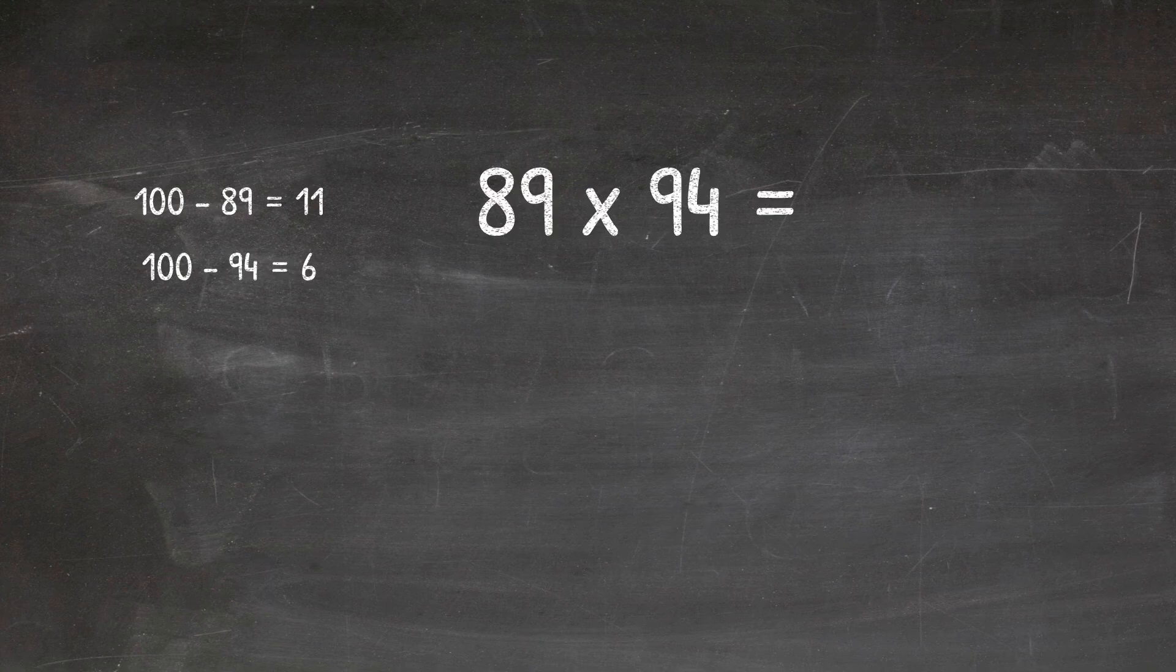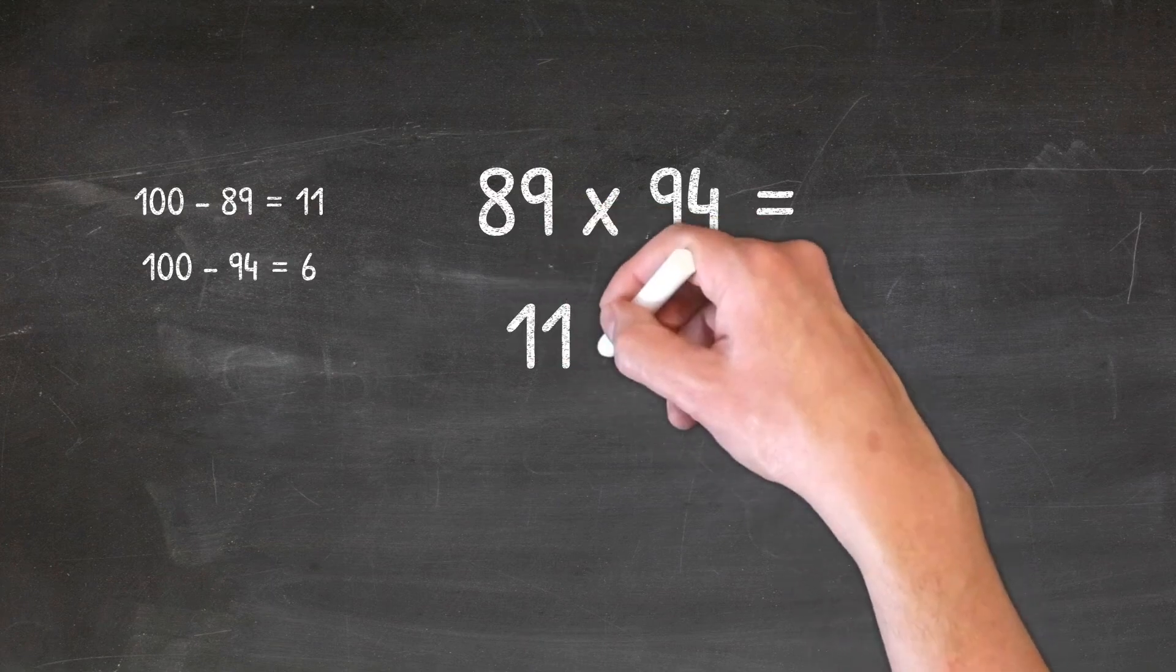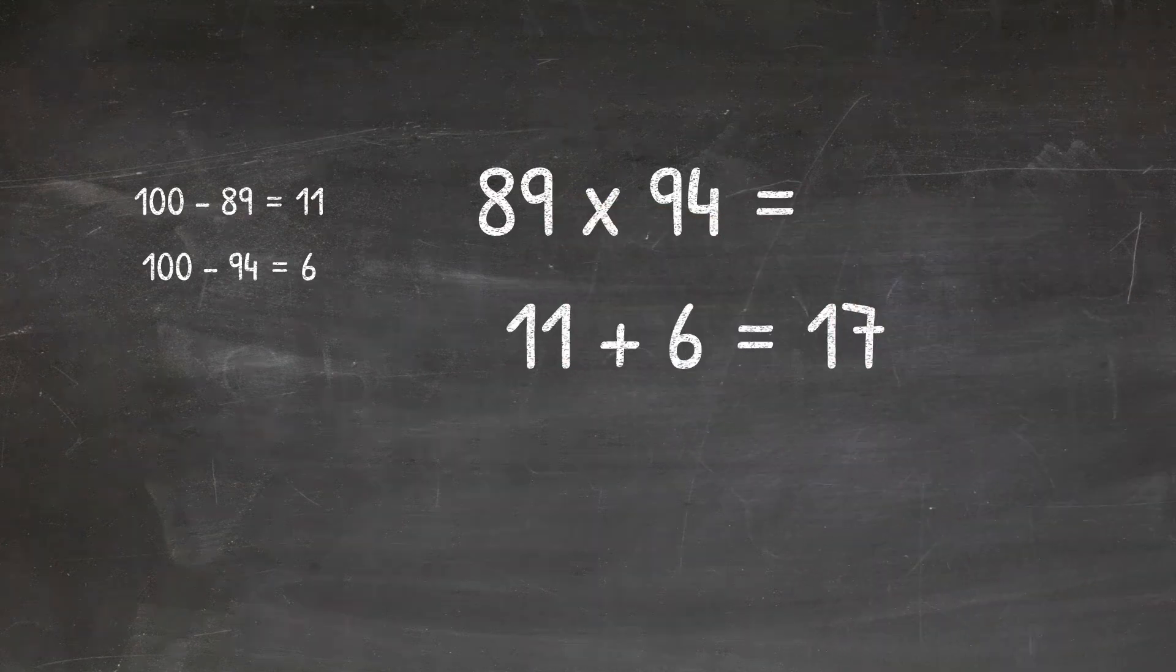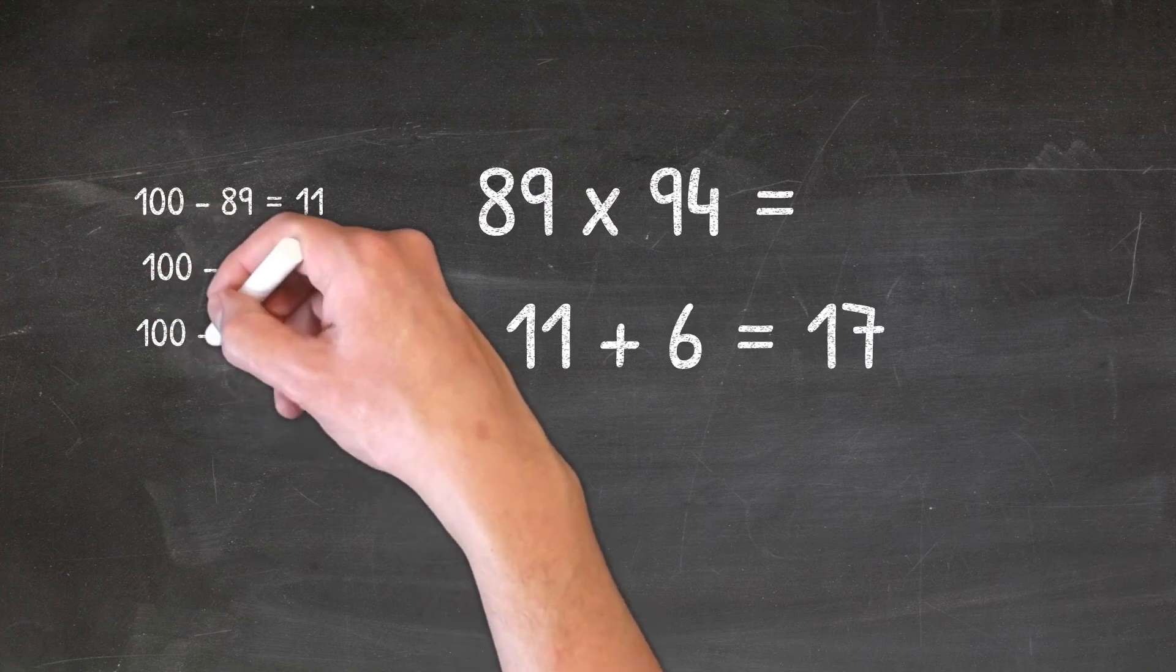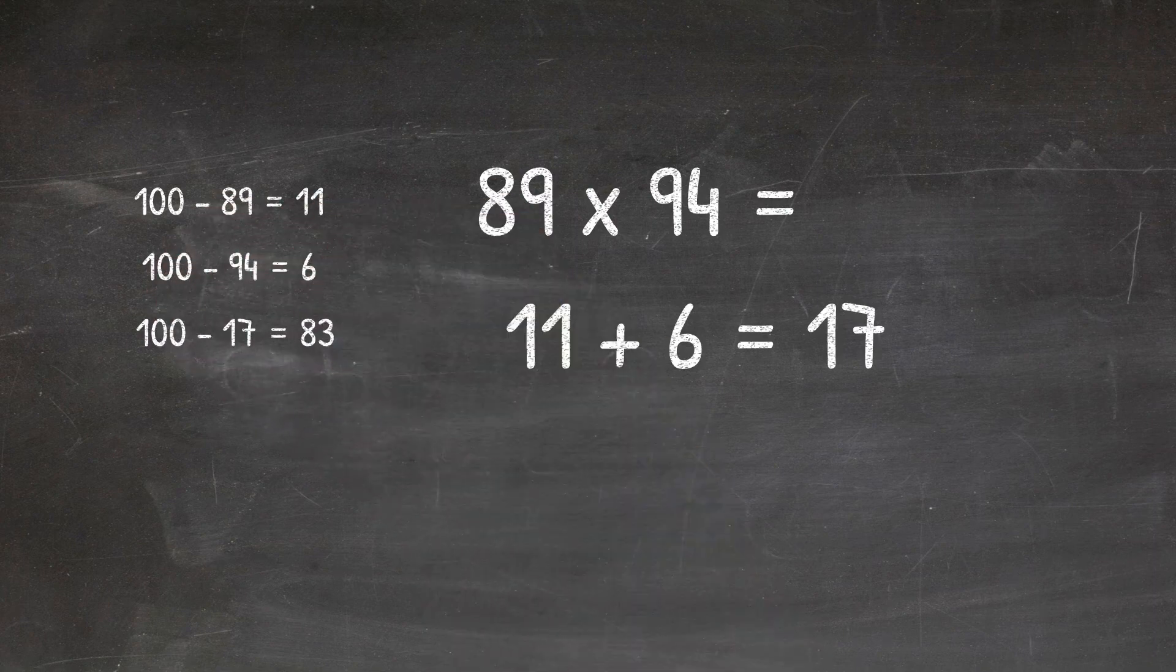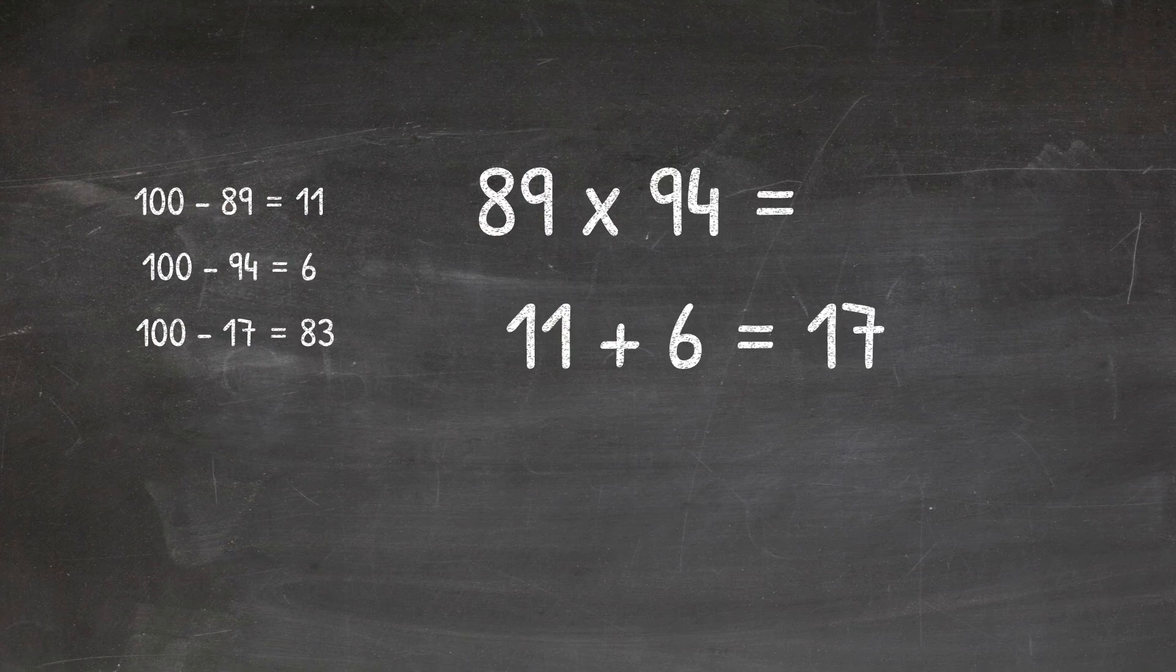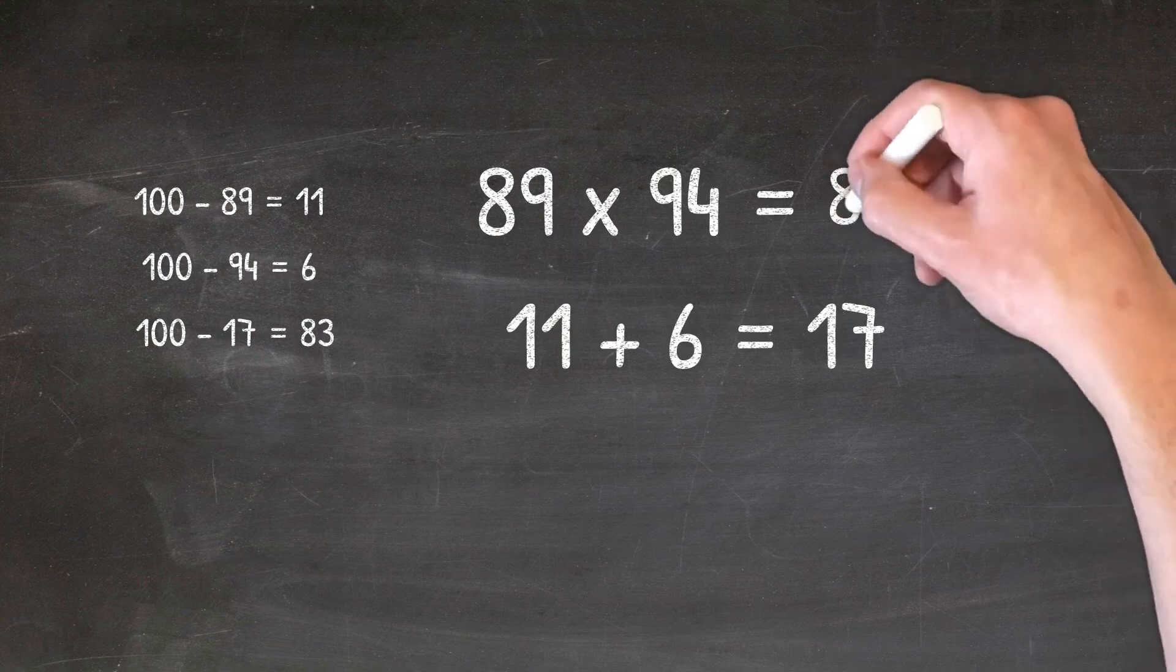Now we're going to take these two numbers, 11 and 6, and add them together. So 11 plus 6 equals 17. Now we're going to take our value of 17 and minus that from 100. So this equals 83. This means the first two digits of our answer is 83.